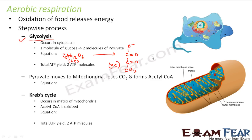Along with that, there is a net gain of two ATP molecules. Actually four ATP molecules are produced, but two are utilized in the process, so the net ATP yield is two ATP molecules. Energy released is in the form of ATP molecules. So the glucose, a six-carbon compound, gets converted into a three-carbon compound, and two ATP molecules are released.